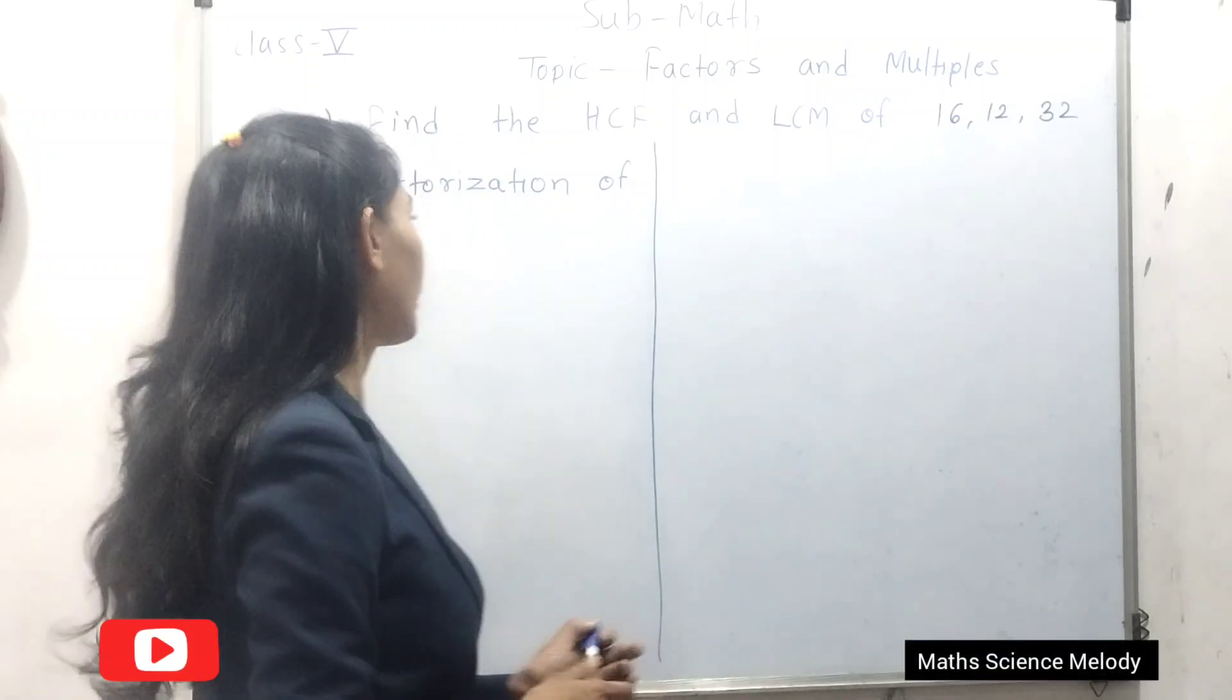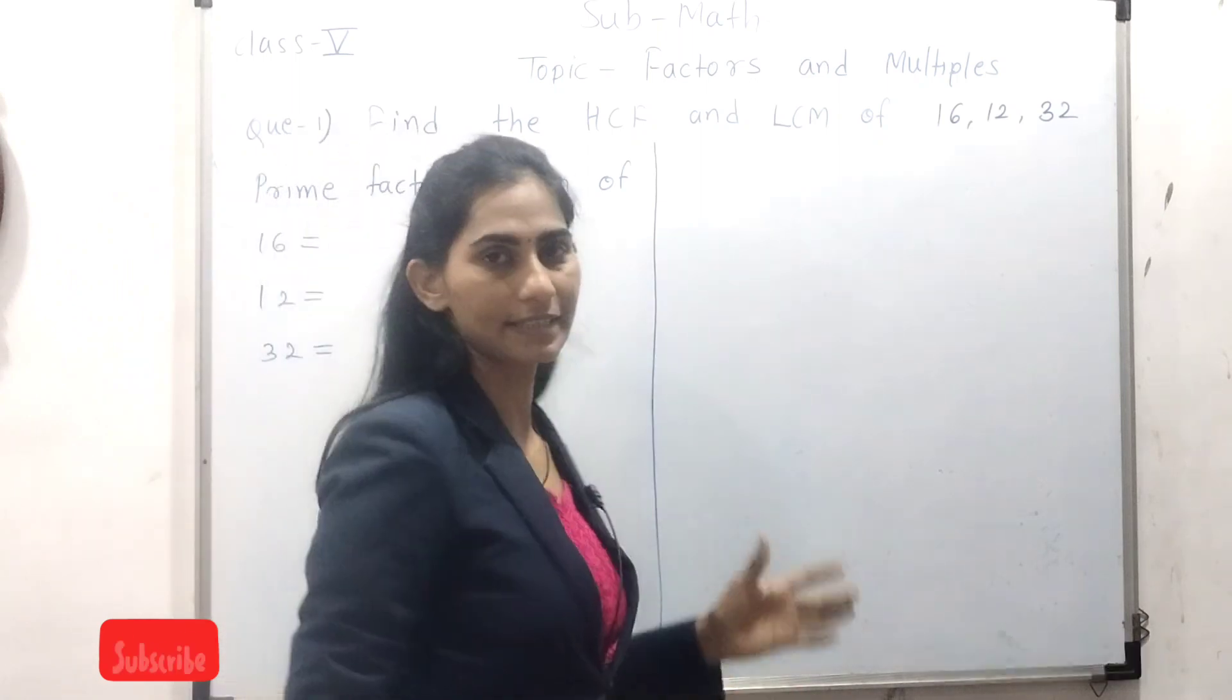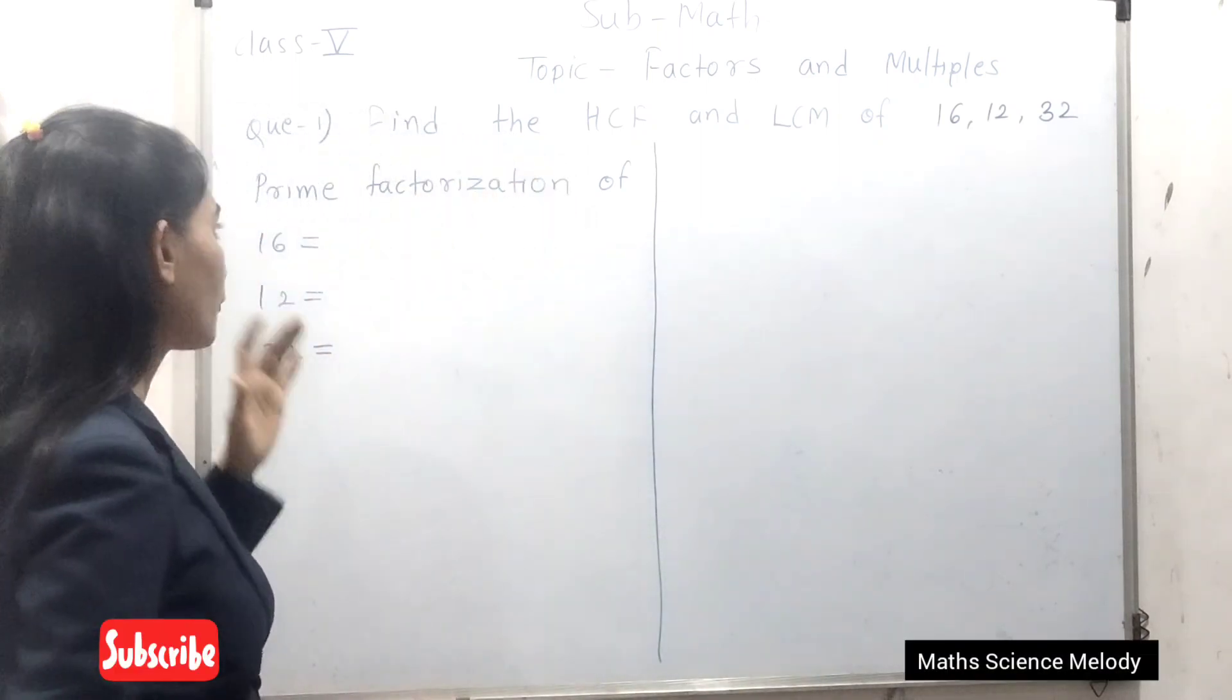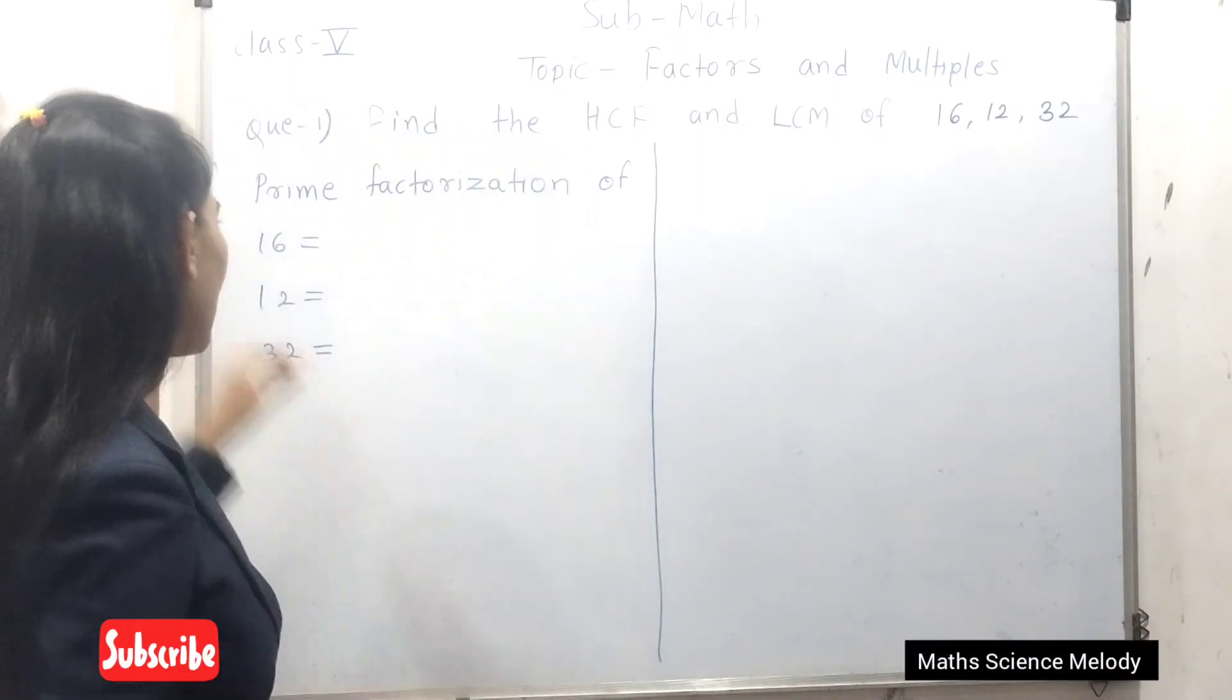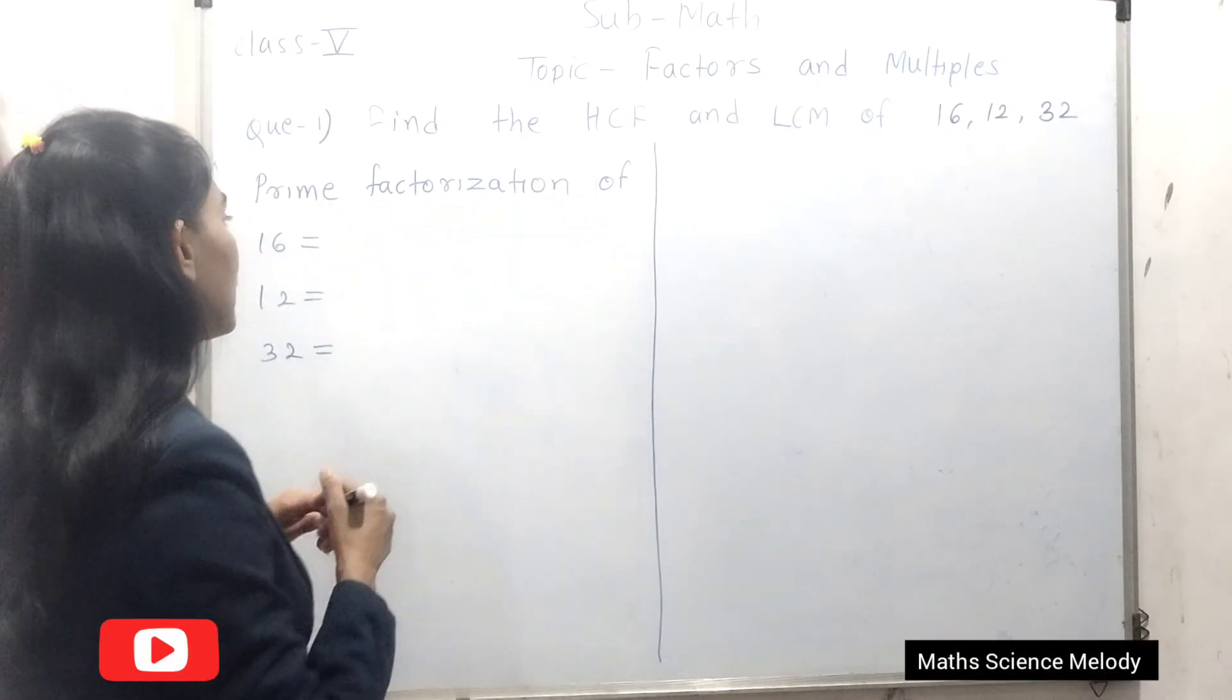Once again, welcome dear all. Here, now we are going to find the LCM and HCF of the given numbers 16, 12, and 32. So first, while writing the answer, you need to write prime factorization of the first number, which is equal to...